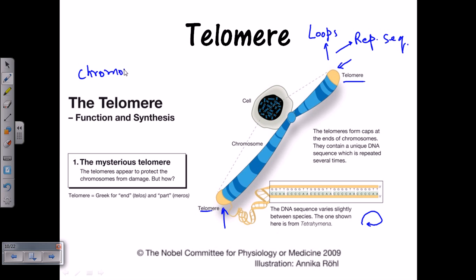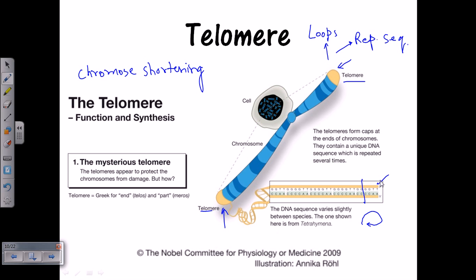The telomere is supposed to prevent chromosome shortening. Chromosome shortening is a phenomenon during the replication of eukaryotic chromosomes — each replication cycle, a particular part of the telomere is lost. To prevent that from happening, there is a repeated sequence of DNA so that even though some amount is lost from the terminal region, all necessary coding regions are preserved.